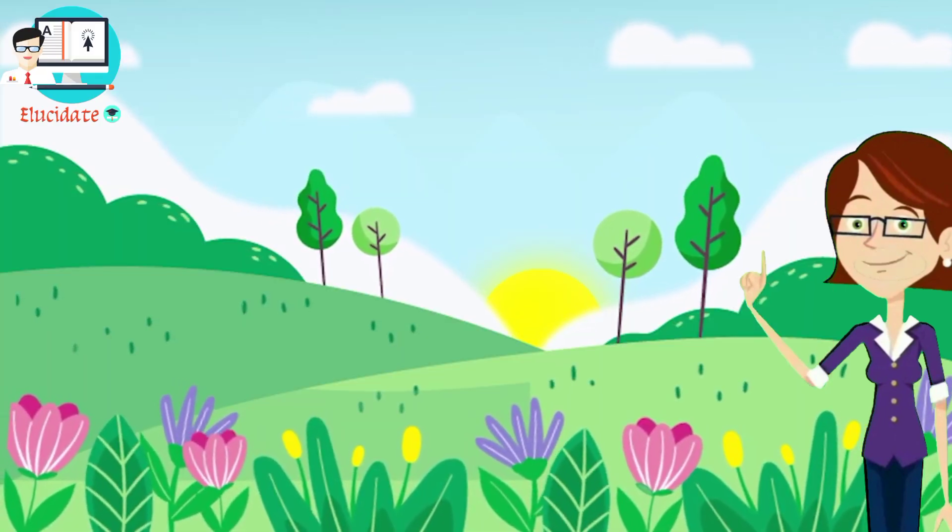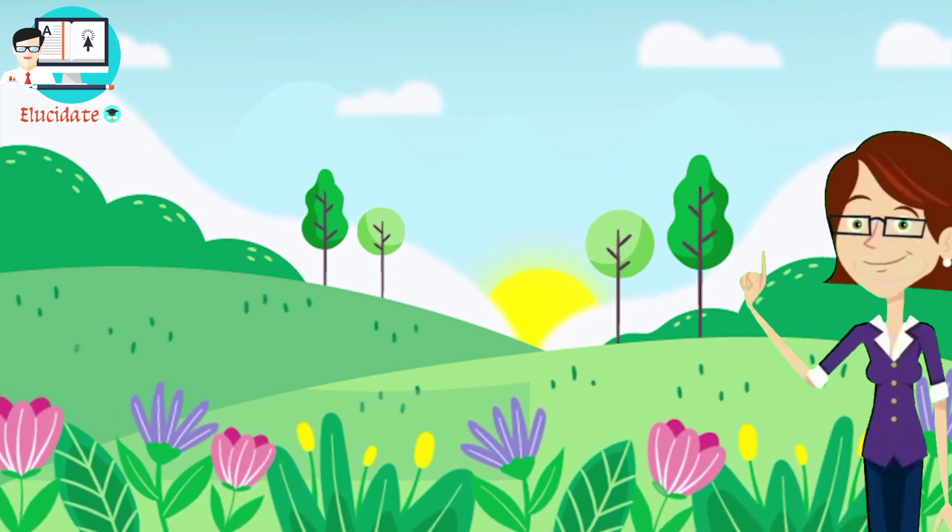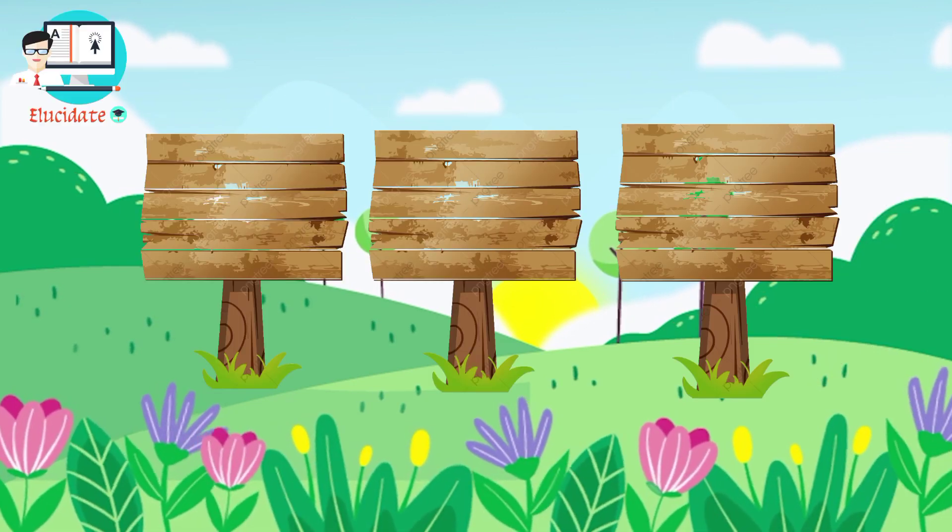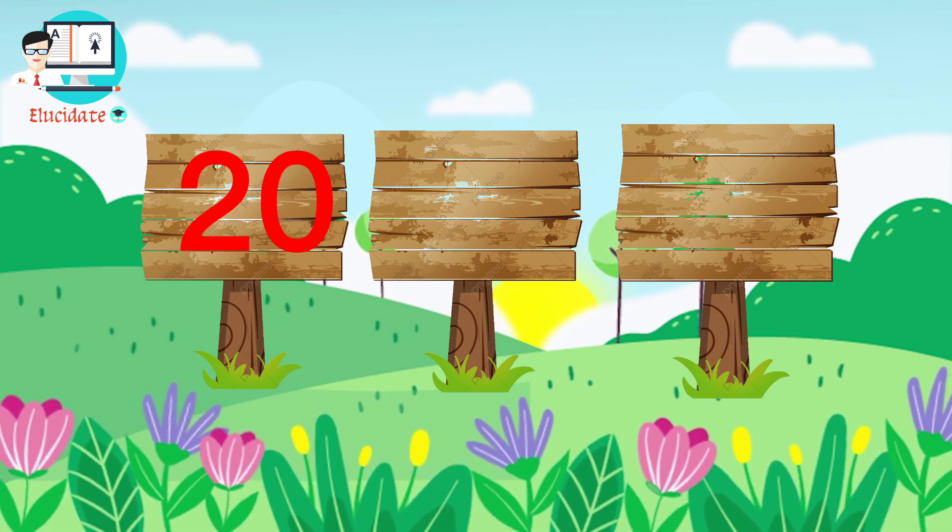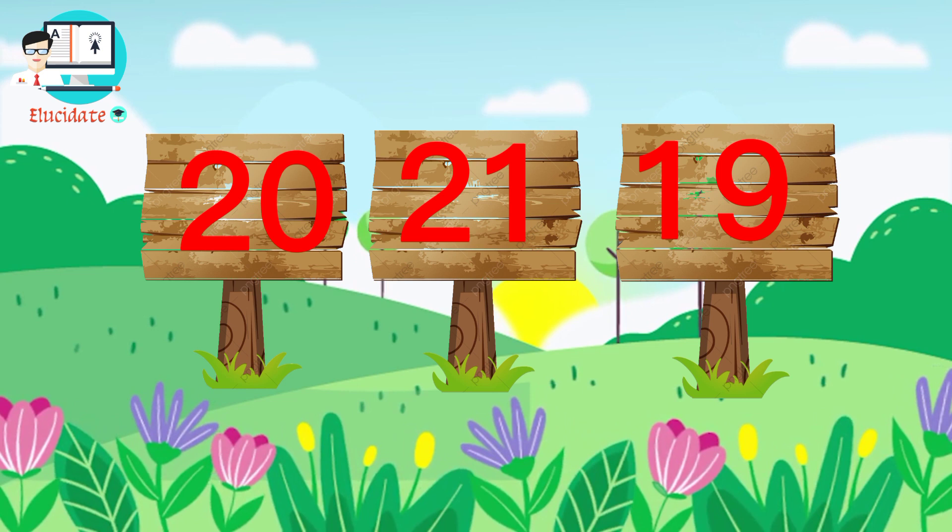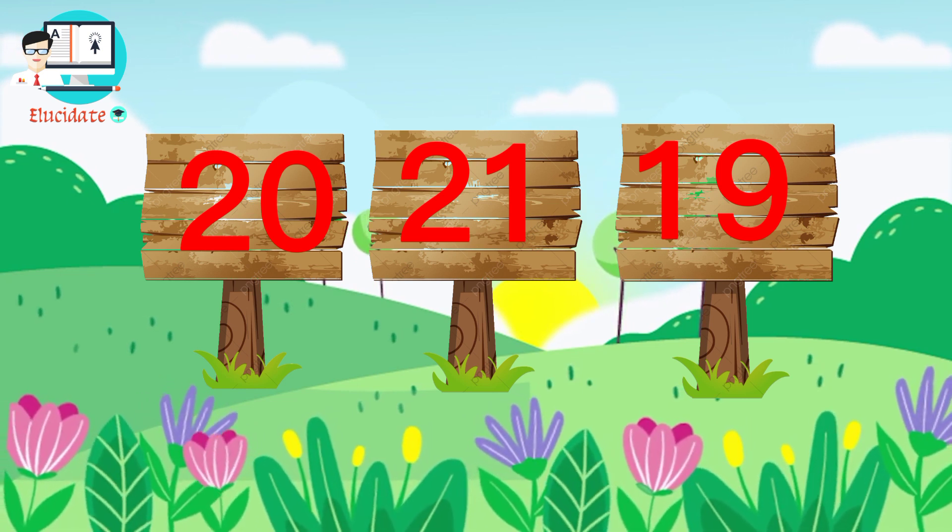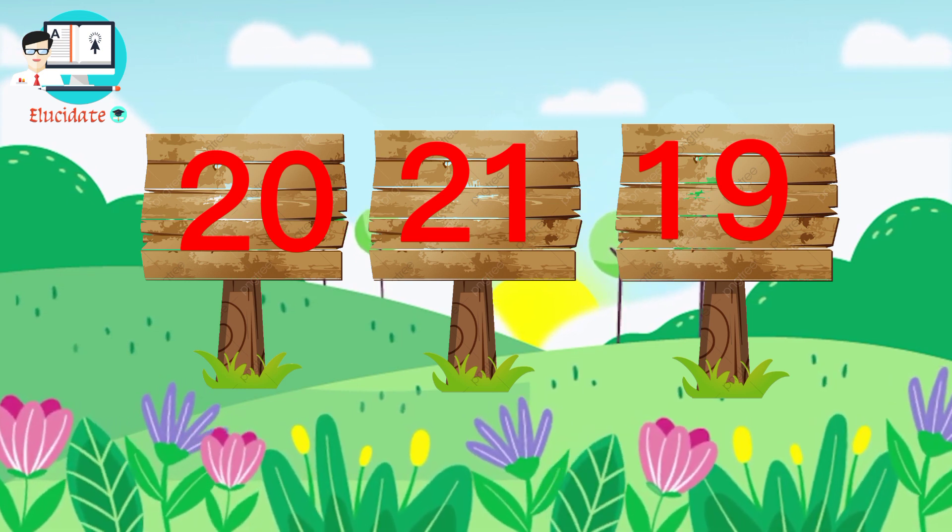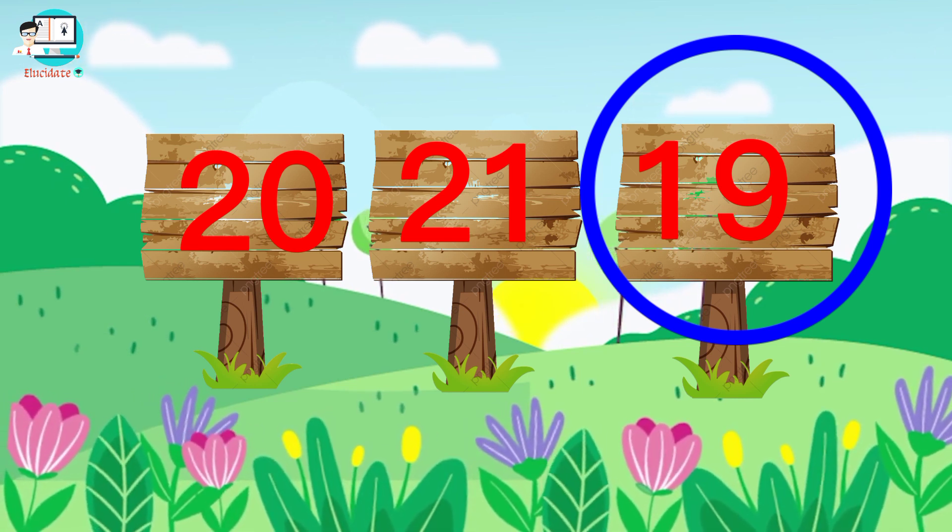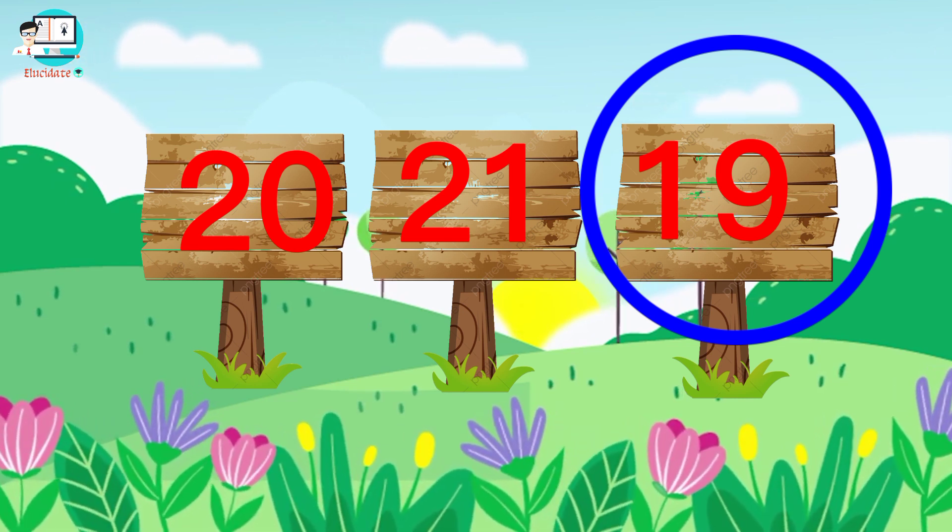Here we have placed some signboards along with the numbers to set them into ascending order. So here is 20, 21, and 19. What do you think - which number is the smallest number? Yes, number 19. This is placed at the end, but it has to be in the beginning to arrange in ascending order. Now here: number 19, then 20, and then 21. Good job!